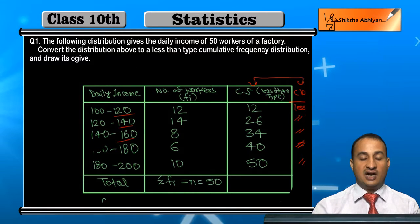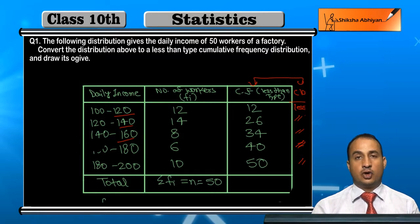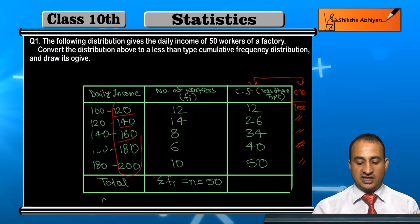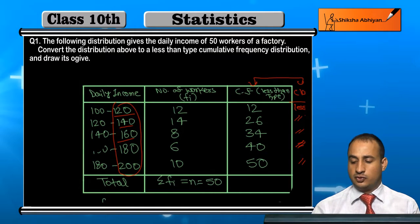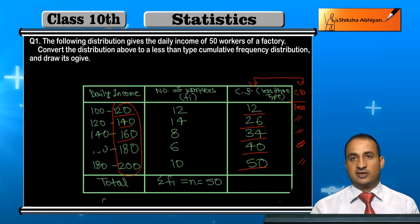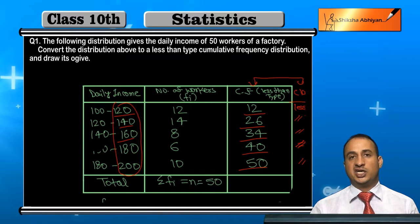Now we will draw the graph. The x-axis represents the daily income — less than 120, 140, 160, and so on. The y-axis represents the cumulative frequencies.